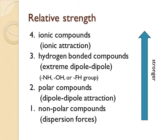The most extreme case is an ionic compound. An ionic compound has a full positive charge on one part and a full negative charge on the other — it's not just electrons spending more time at one end. Those attractions between the positively charged piece and the negatively charged piece are really, really strong.